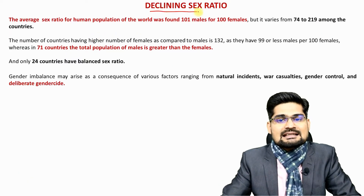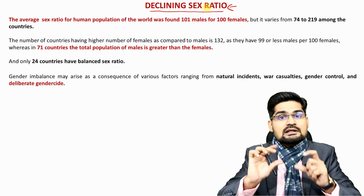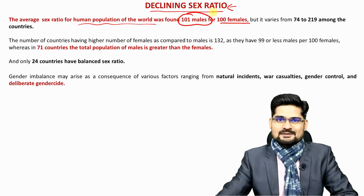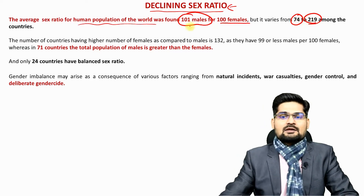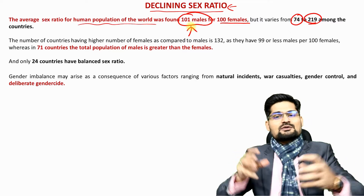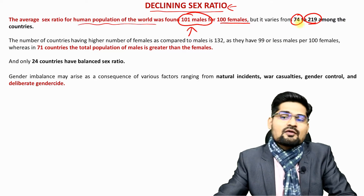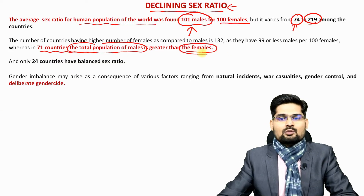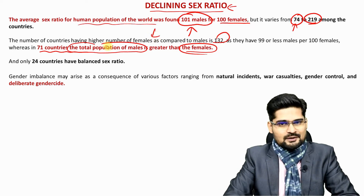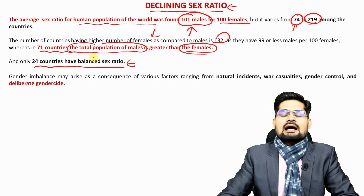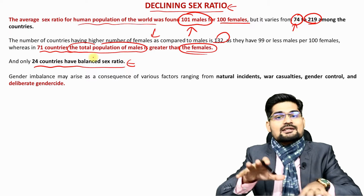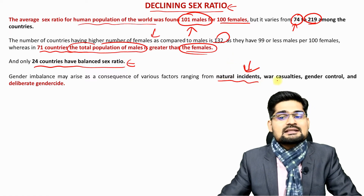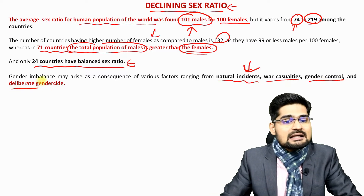Declining sex ratio is directly connected to fertility factors. The average sex ratio for the human population of the world was found to be 101 males for 100 females, but it varies from 74 to 219. In 71 countries the total male population is greater than females, and in 132 countries females are higher in number. Only 24 countries of the world have a balanced sex ratio — meaning a larger part of the world has an imbalanced sex ratio. Factors include natural incidents, war casualties, gender control, and deliberate 'gendercide' — where a particular gender is losing life.